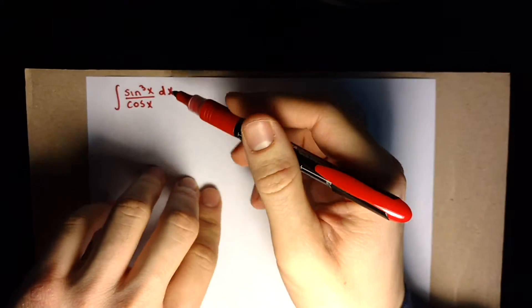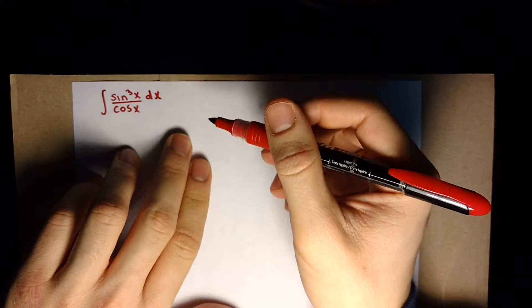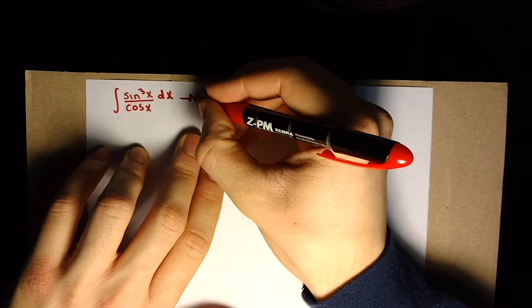We've got the integral of sine of x cubed over cosine of x, and we're going to solve this by using a trigonometric identity.